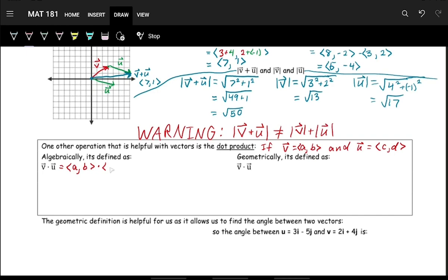Then the way that we do v dot u is, I'm going to write them out, (a,b) dot (c,d). We just multiply components together and then add. So we do a times c plus b times d.